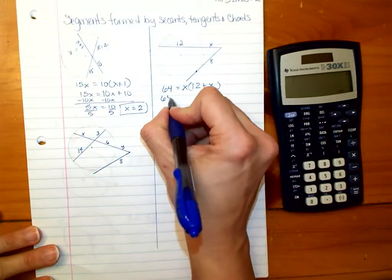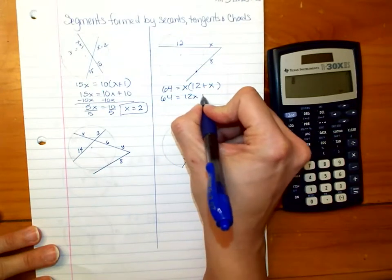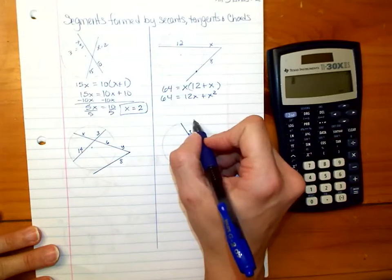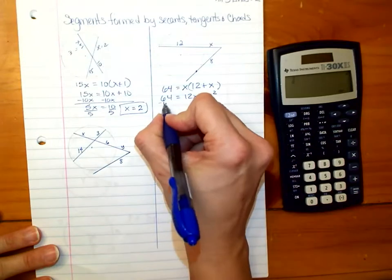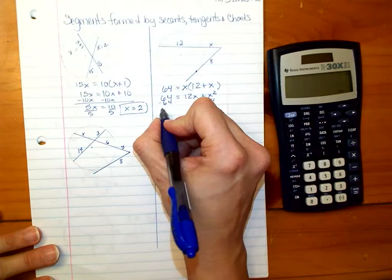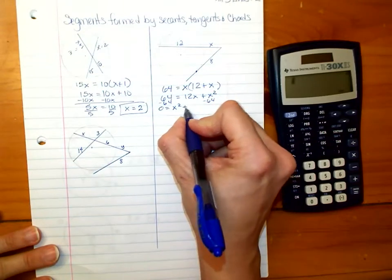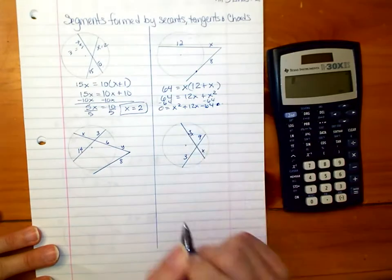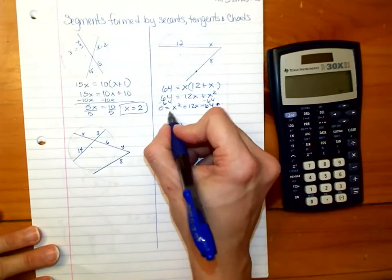Again, we'll distribute. We get 12X plus X squared. That's a quadratic equation, so we need to get everything on one side. We minus 64 from both sides, and we get 0 equals... We'll put it in order, too, at the same time. So now we have to factor.